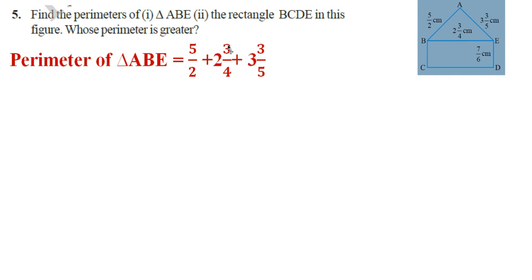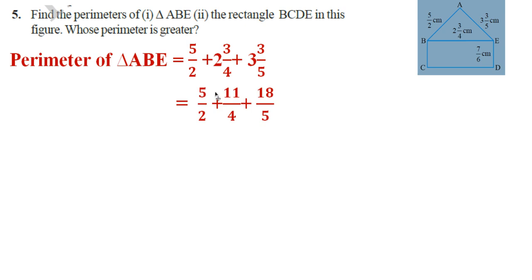2 3/4 is equal to 2 × 4 + 3, that is 8 + 3, which gives 11/4. Then 3 3/5 is 15 + 3, which is 18/5. So we can write: 5/2 plus 11/4 plus 18/5.